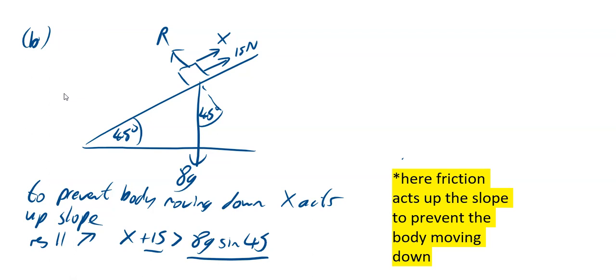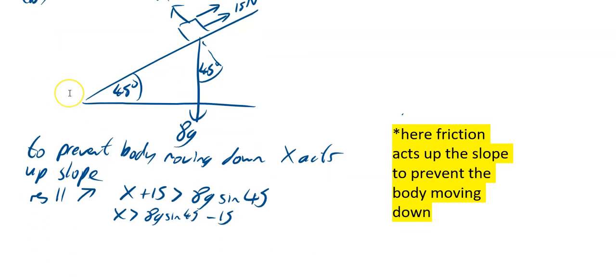X plus 15, to prevent it moving down the plane, X plus 15 has to be greater than your 8G sine 45, which means X itself has to be greater than 8G sine 45 minus 15, which means your X needs to be greater than 41.57 Newtons to two decimal places.